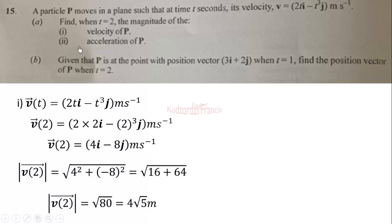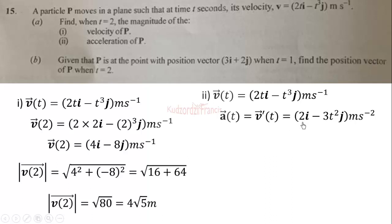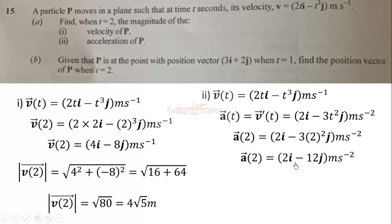For part (a)(ii), we calculate the acceleration of P at t equals 2. To get the acceleration, we differentiate the velocity expression. The acceleration equals the first derivative of the velocity function, giving us 2i minus 3t-squared j in meters per second squared. Substituting t equals 2, we get 2i minus 3 times 2 squared j, which equals 2i minus 12j.